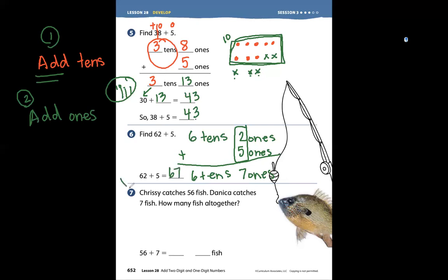Problem number 7 says Chrissy catches 56 fish. Danica catches 7 fish. How many all together? Those are joining words. That means 56 has to be a part, 7 is a part, and we are going to add them together to look for the whole.